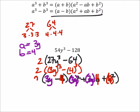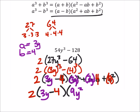And then we have that 2 out in front. So we've got 2 times a 3y minus 4. And then in this other parentheses, a 3y squared, that's going to give us 9y squared plus 3y times 4, that would give us 12y's.